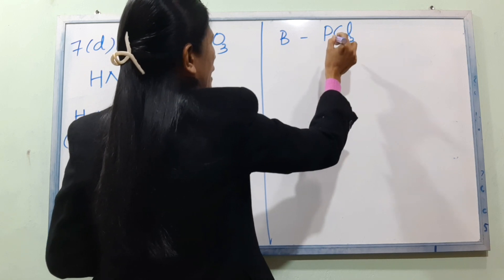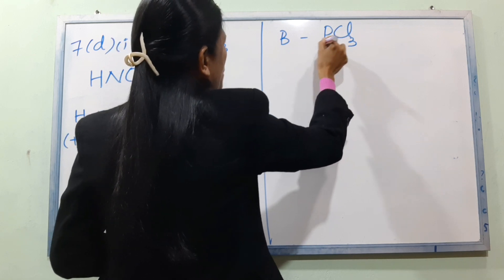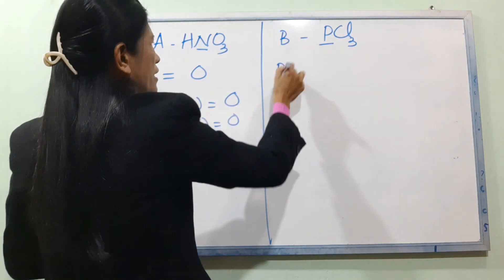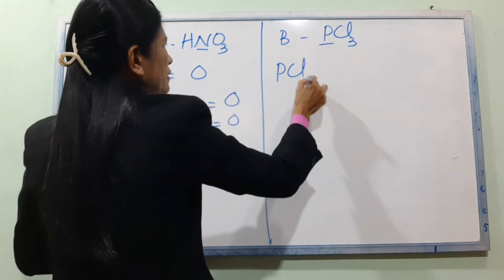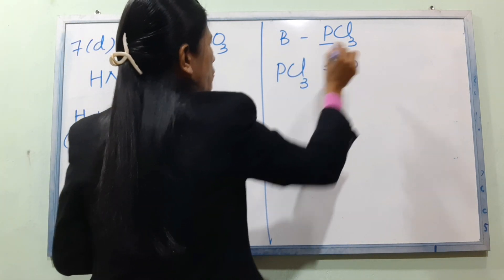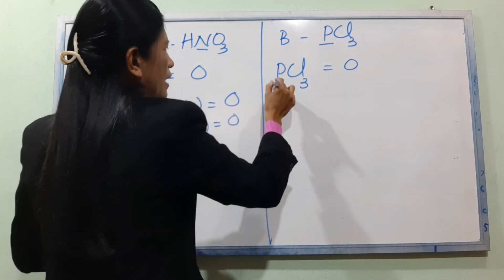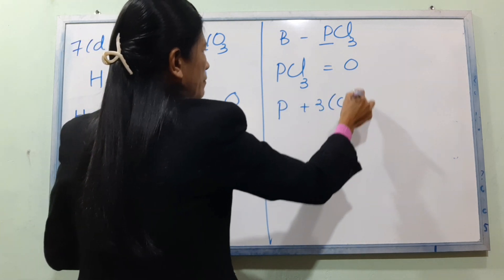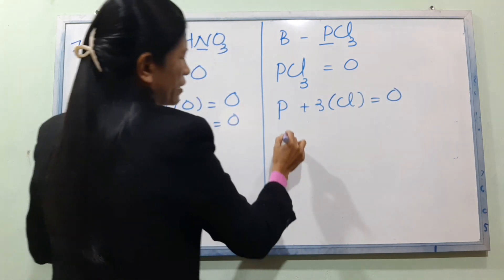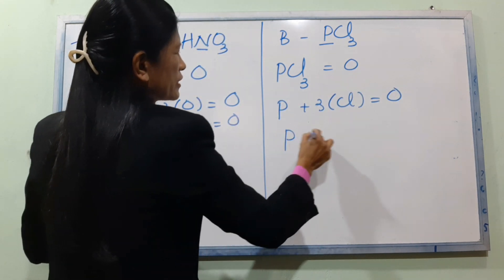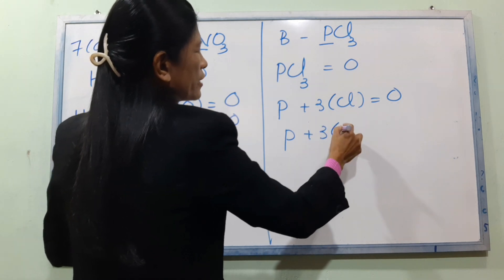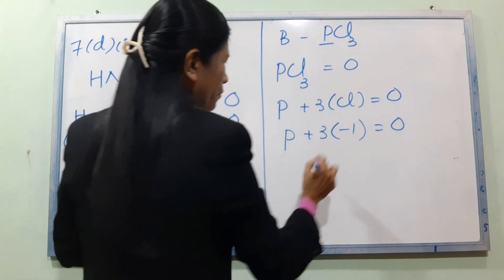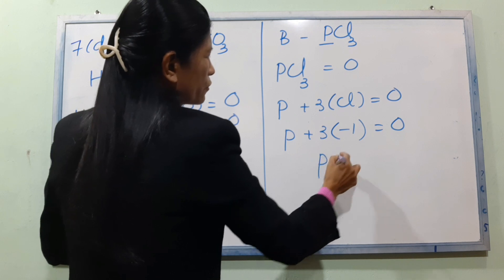BCl3: B is the element in solution. The oxidation number equation for BCl3 is B plus 3(-1) equals zero, so B equals plus 3. The oxidation number of Cl is minus 1. B has oxidation number plus 3.